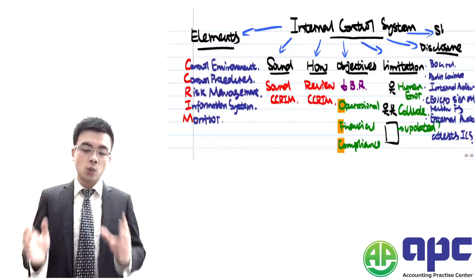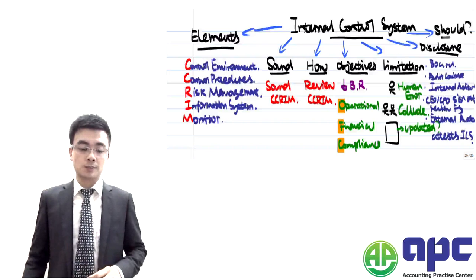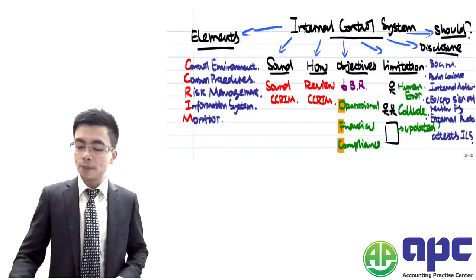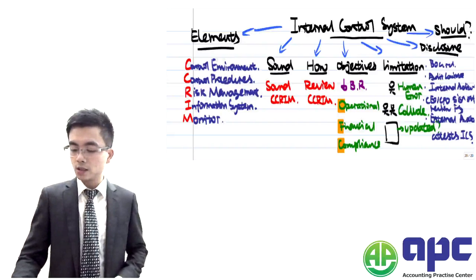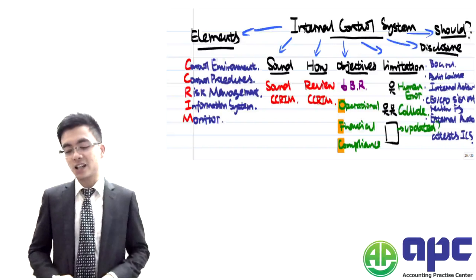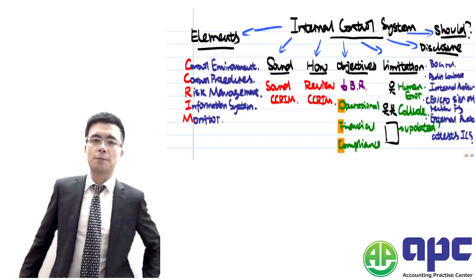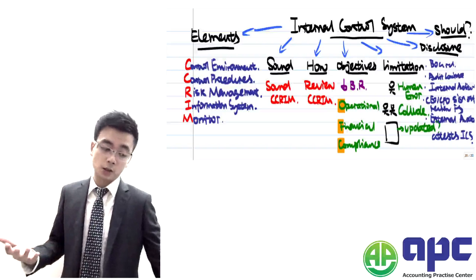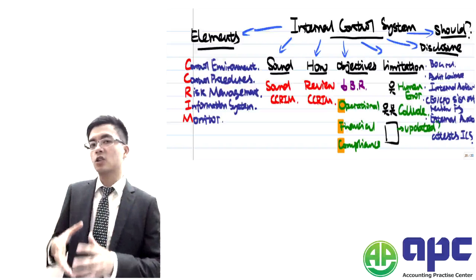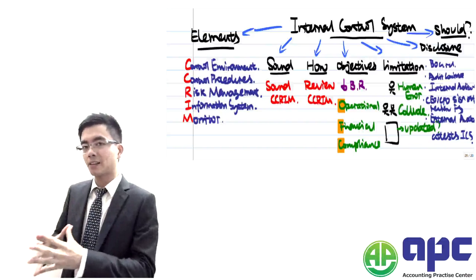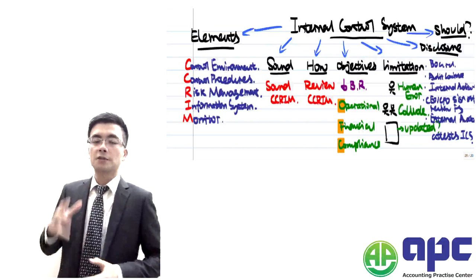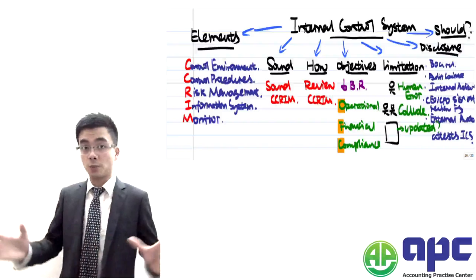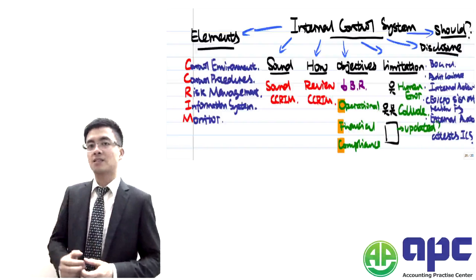Those are the three disclosures we have to make with regards to the internal control systems. The final question is whether we should maintain this particular internal control system. Should we maintain it? This refers to the costs as well as the benefits. If the cost of holding the system is too high and outweighs the benefit, there's no point maintaining the system. That's the overview of the internal control system.